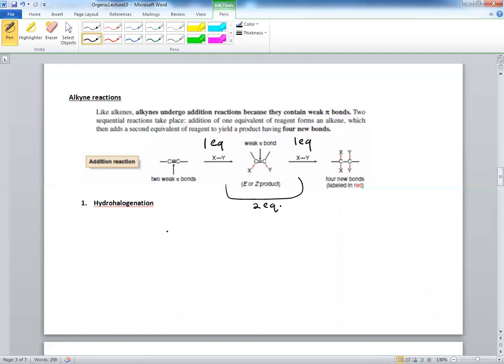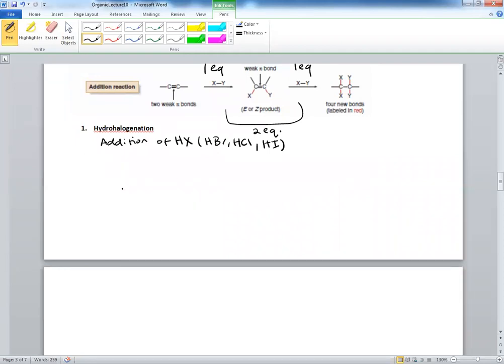What is hydrohalogenation? This is the addition, just like you saw here, the addition of HX. This could be HBr, could be HCl, or HI. Suppose you have, start with this generic reaction. Let's say we have HBr. Generally, this one is used in this solvent, carbon tetrachloride.